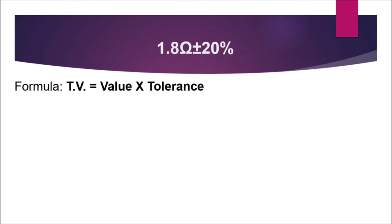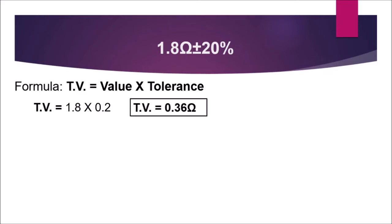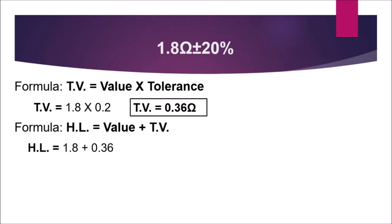Let's have another example. Suppose we have 1.8 ohms ±20%. We first get the tolerance value by multiplying the value by the tolerance. 20% is equal to 0.2, so 1.8 multiplied by 0.2 gives us 0.36 ohms. This tolerance value will be added and subtracted from the value to get the range. The higher limit is value plus tolerance value: 1.8 plus 0.36 is equal to 2.16 ohms.